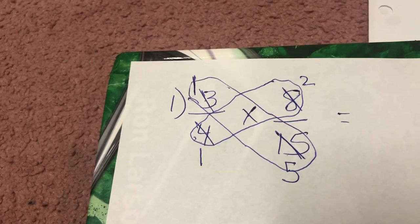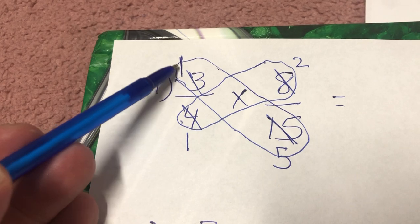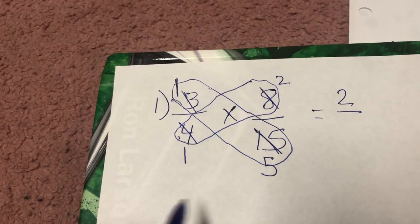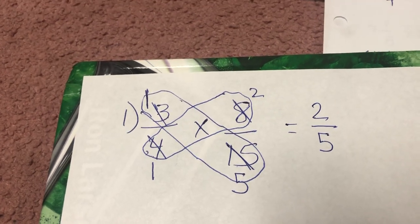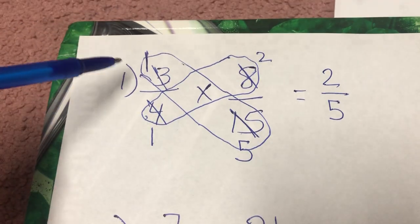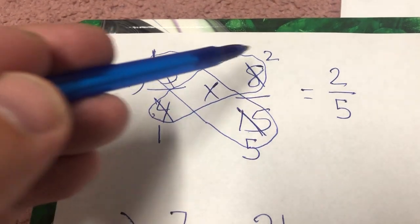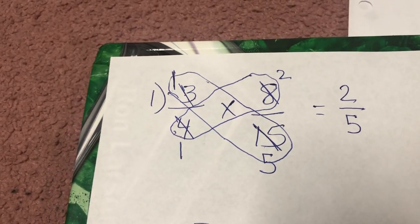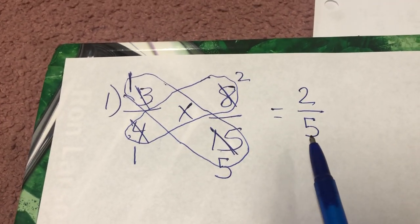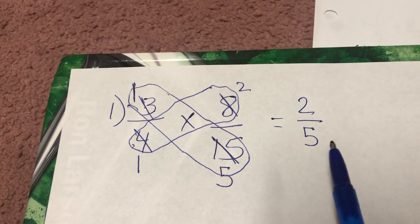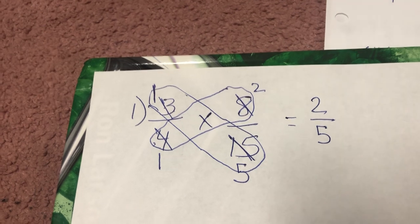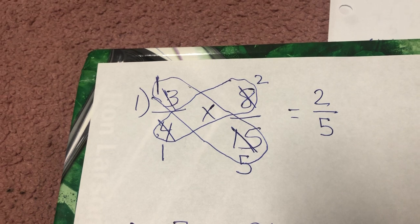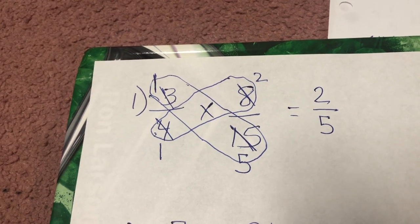Now I'm ready for step three, which is to multiply. I multiply the numerators: one times two is two. Then I multiply the denominators: one times five is five. I end up with two over five. Step four always tells us to simplify. A fraction is in simplest form if the only number that can go into both the numerator and denominator is one. There's no number other than one that can go into both two and five, so two-fifths is in simplest form.